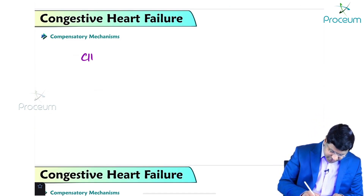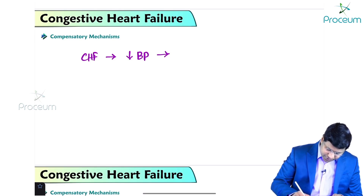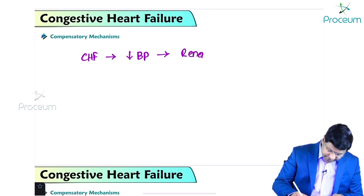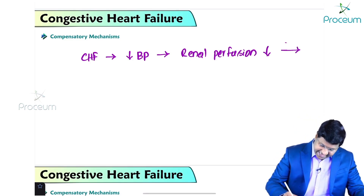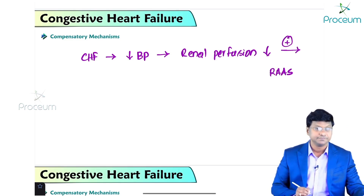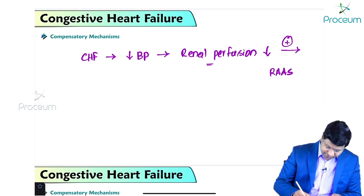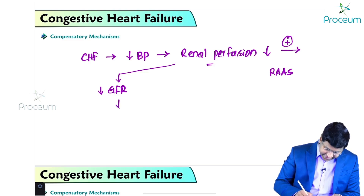This is the first compensatory mechanism in congestive heart failure — it increases blood pressure. The second compensatory mechanism: in congestive heart failure, blood pressure is reduced, leading to reduced renal perfusion. Once renal perfusion is reduced, there is activation of the renin-angiotensin-aldosterone system, and there will be a decrease in GFR — the glomerular filtration rate.